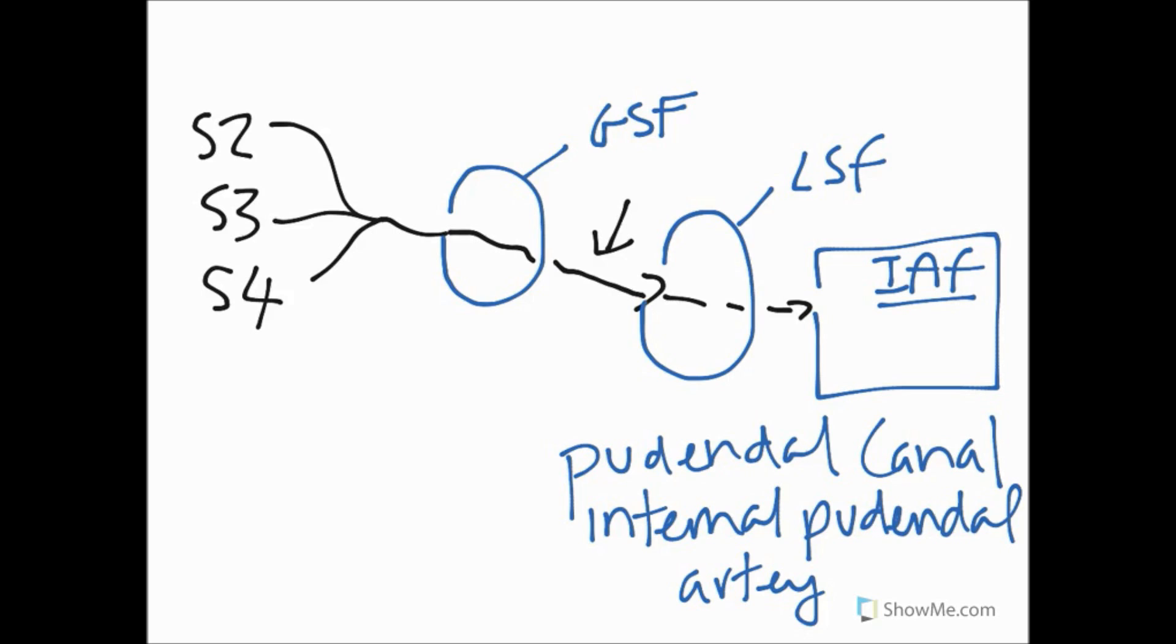And once it runs in this pudendal canal and enters into the ischial anal fossa, which is where it begins to branch.